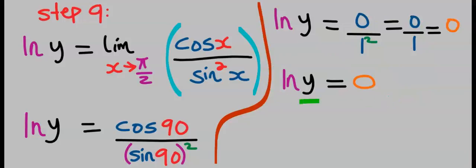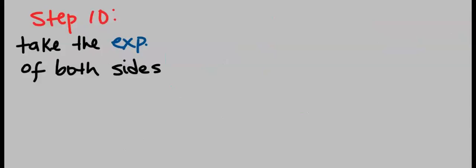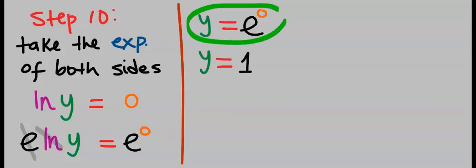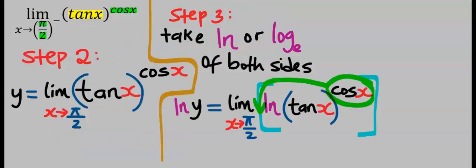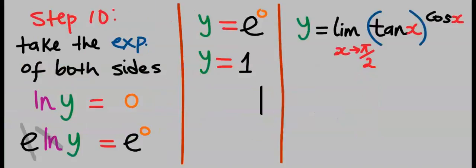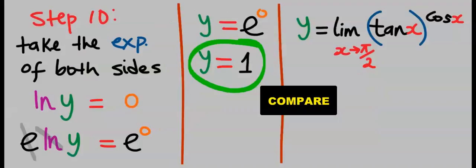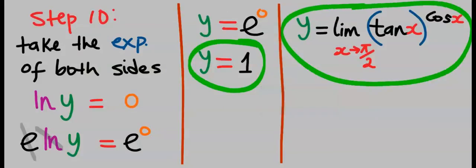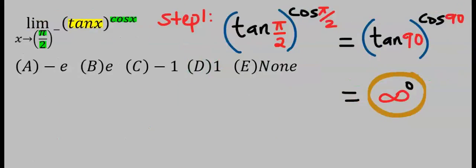Next, to make y the subject and get rid of the natural log, we're going to take the exponentials of both sides of the function, which is step 10. Take the exponentials of both sides. Exponential will neutralize natural log. Next, y is now equal to exponential 0, and exponential 0 is 1. Recall from step number 2, we assigned the given question to y. If y is equal to 1 and we assigned y to be equal to the given question, then our final answer is 1. And from the options, our answer is D.